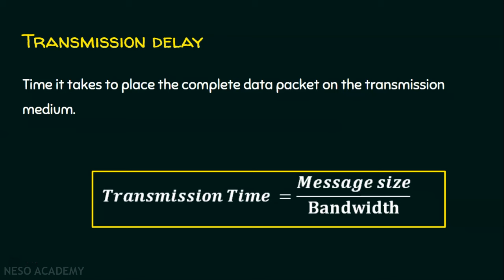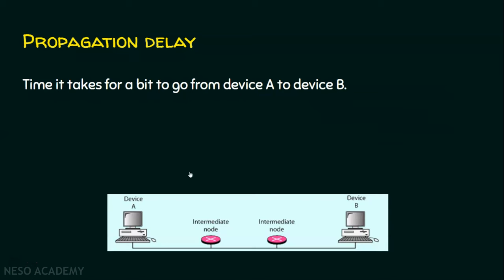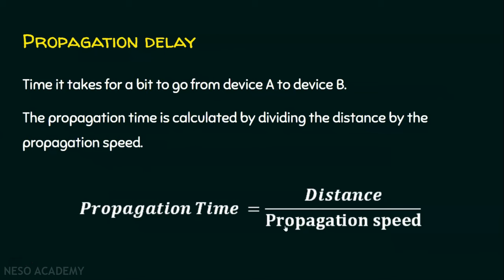We are done with transmission delay. Now let's see the propagation delay. Propagation delay means the time it takes for a bit to go from device A to device B. Suppose we have two devices — device A and device B — and device A has a message to be sent, which is a complete set of zeros and ones. How much time for a bit to travel from device A to the destination device is called as the propagation delay. This propagation delay is based on two factors: number one, the distance, and number two, the propagation speed. The propagation delay or propagation time is calculated by dividing the distance by the propagation speed.